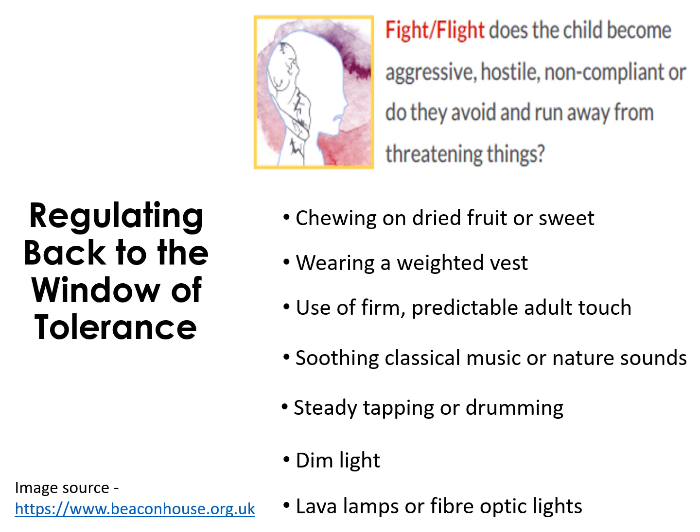With learners in mind, Beacon House suggests some further approaches which can be used to help a child regulate back to within their window of tolerance. The key is that they are repeated regularly and repetitively. Here are some suggestions for children who exhibit a fight or flight response: wearing a weighted vest, use of firm predictable adult touch, soothing classical music or nature sounds, sensory tapping or drumming, the use of dim lights, lava lamps or fibre optic lighting, and chewing on dried fruit or sweets.